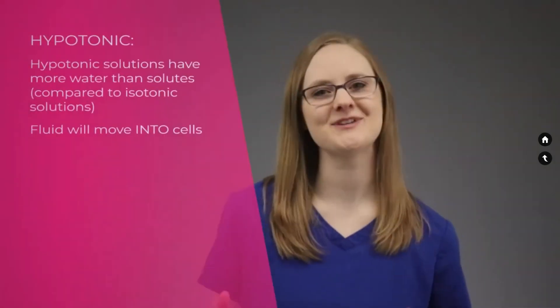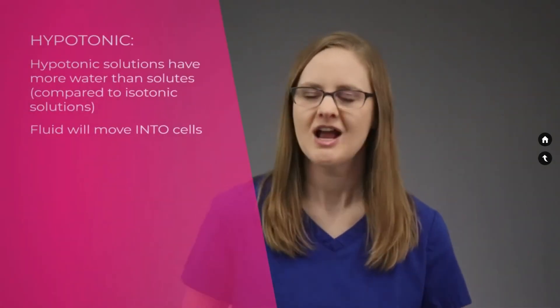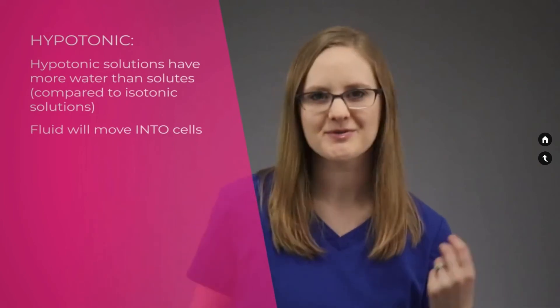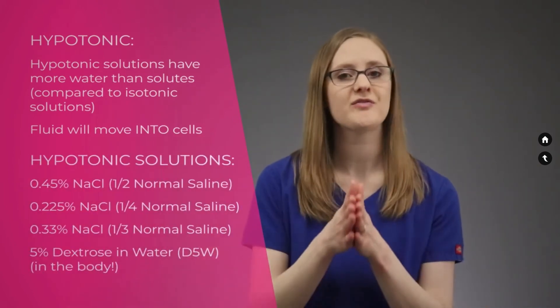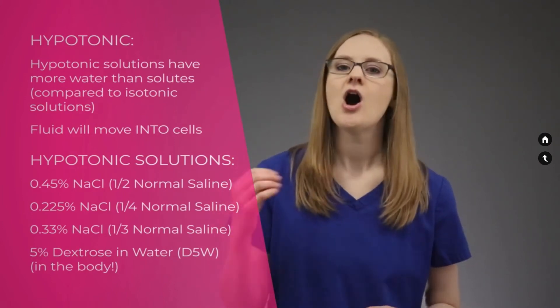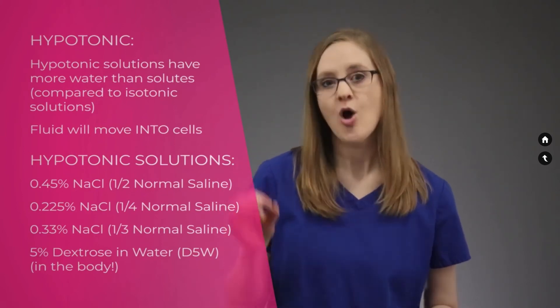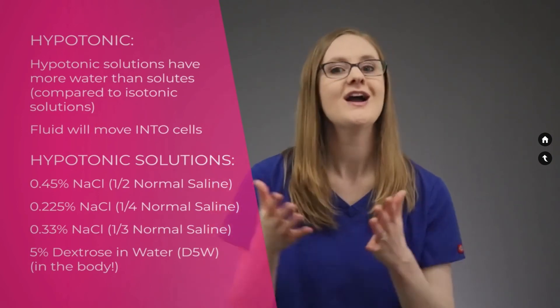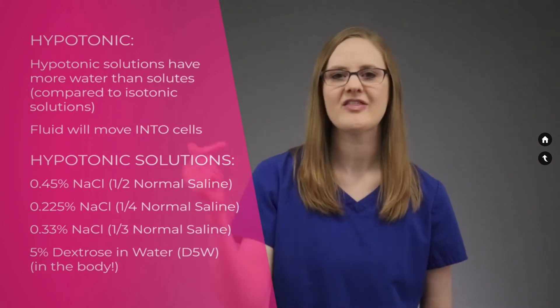Hypotonic solutions have more water than they do particles. When you give a hypotonic solution, the water moves into the cells and makes them big and round. The hypotonic IV solutions to know are half normal saline or 0.45% saline, quarter normal saline or 0.225% saline, one-third normal saline or 0.33% saline, and 5% dextrose in water or D5W when it's in the body.